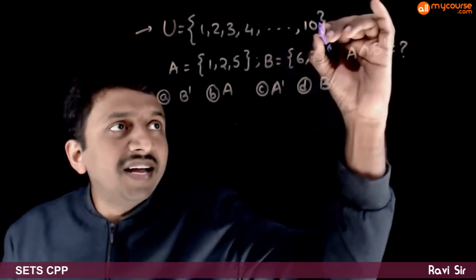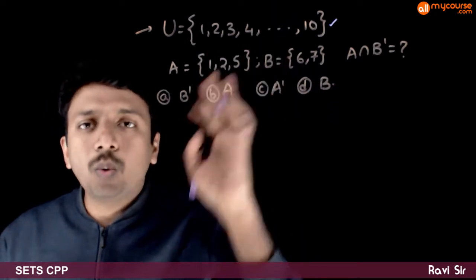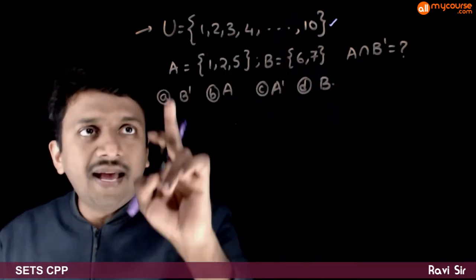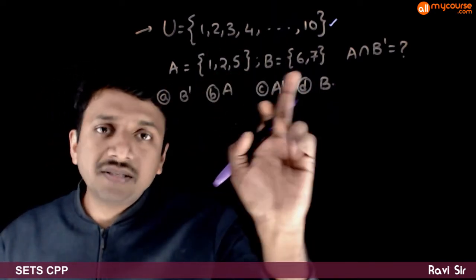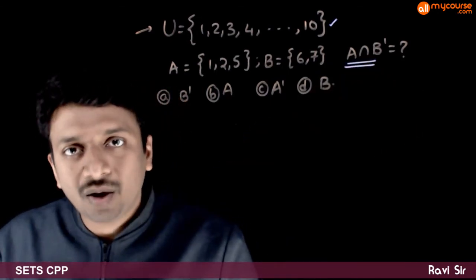In this question, we're given that the universal set is the set 1 to 10, set A is 1 to 5, set B is 6 to 7. We are asked to find A intersection B complement.